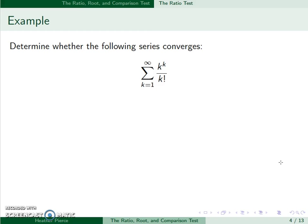Next, we'll look at this one: k to the kth power over k factorial. So r, we look at the k plus first term. So k plus 1 to the k plus 1 over k plus 1 factorial divided by the kth term.